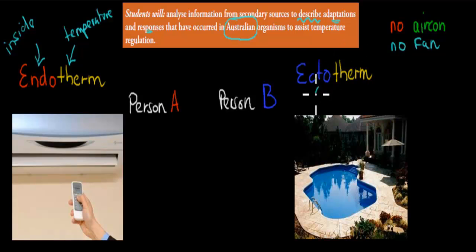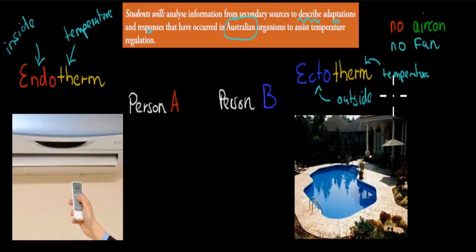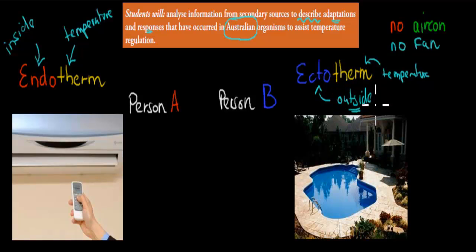Whereas on the other side, ectotherms — 'ectos' means outside, and 'therm' means temperature. So an ectotherm is an organism, or an animal, or a plant, that cannot keep its internal temperature constant by itself. It needs to use the outside environment to do that. So whatever the ambient temperature — whatever the outside temperature is — is also its internal temperature.